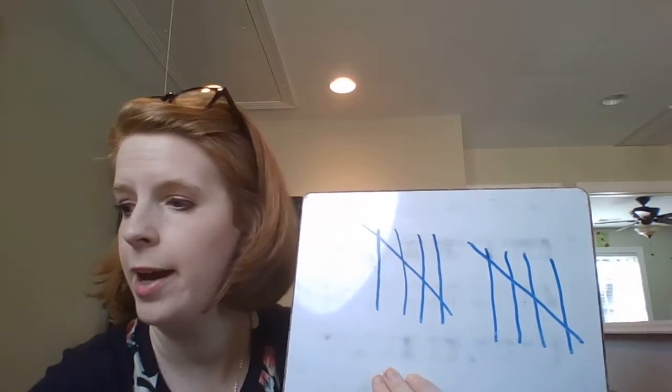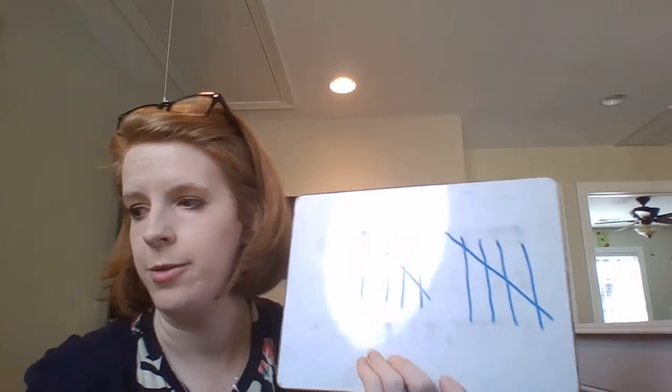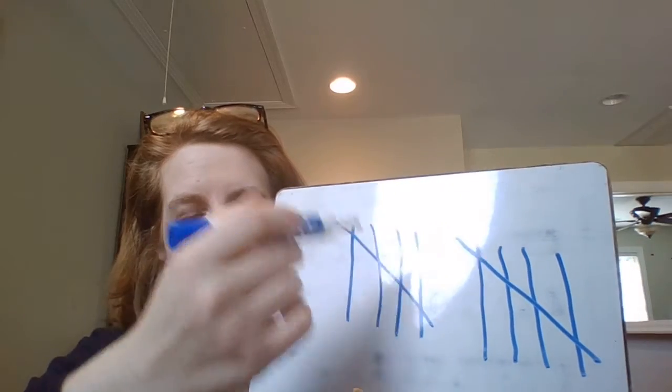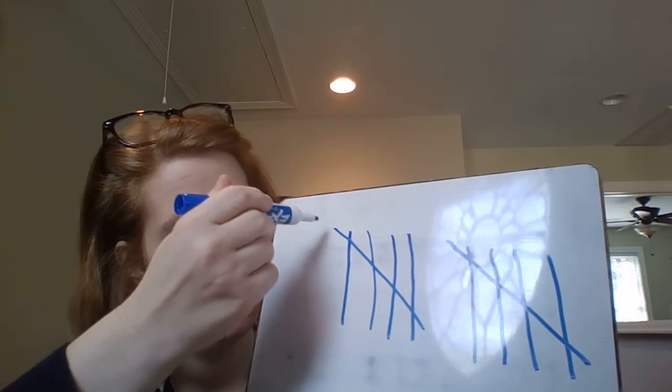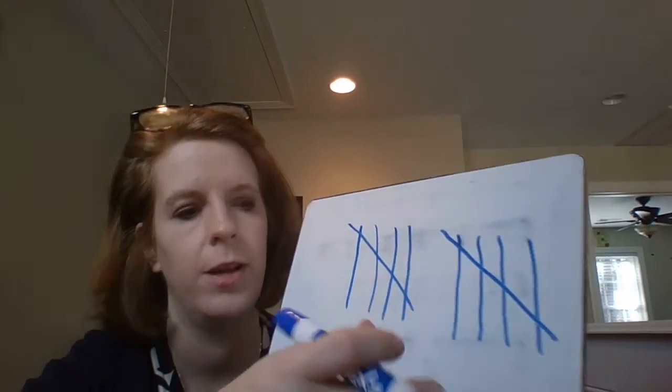So this is how the robots count. They count by making lines. So four straight up and down lines. And then the fifth one comes across.